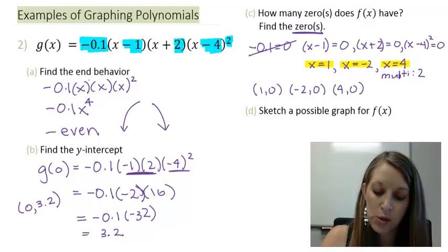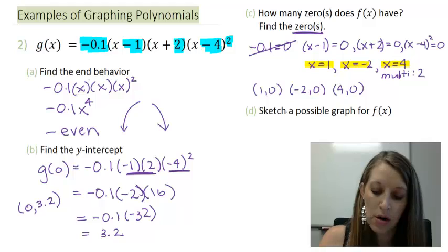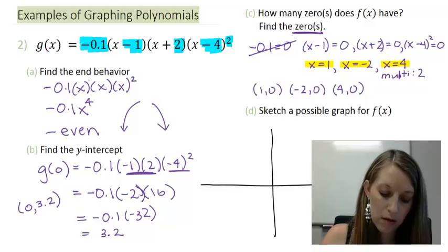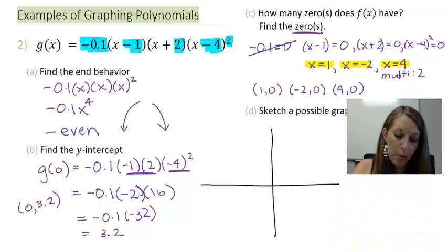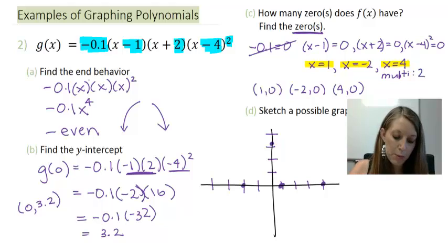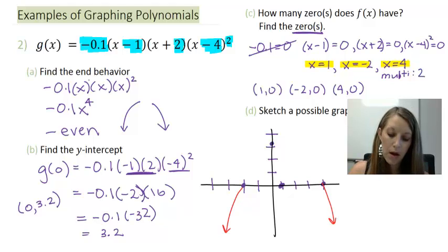And their ordered pair format is (1,0), (-2,0), and (4,0). So let's put this all on the graph. So plotting my points first, let me start with my x-intercepts this time. I have an ordered pair at (4,0), at (1,0), and at (-2,0). I also have a y-intercept at 3.2. Let me fill in with my end behavior. I know it's going to go down on the left and down on the right.